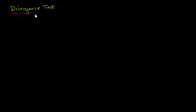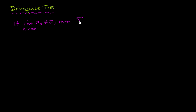So first let me write it in mathy notation, and then we'll look at a concrete example of it. The divergence test tells us that if the limit as n approaches infinity of a sub n does not equal zero, then the infinite series going from n equals one to infinity of a sub n will diverge. We've already gone through what it means to diverge — that this sum is either going to go unbounded to positive infinity, or unbounded to negative infinity, or it'll just oscillate between values and never really approach a given sum or value.